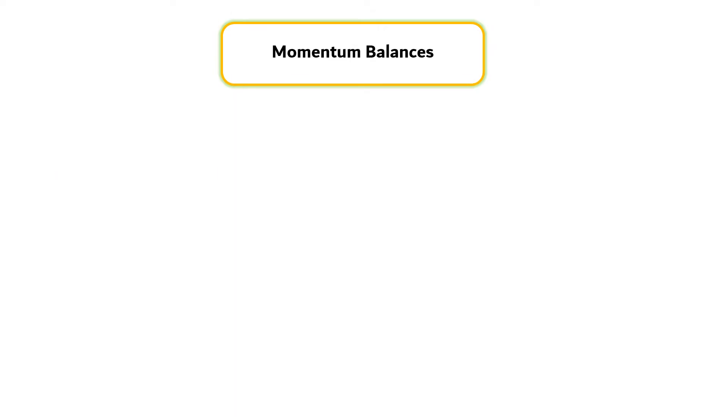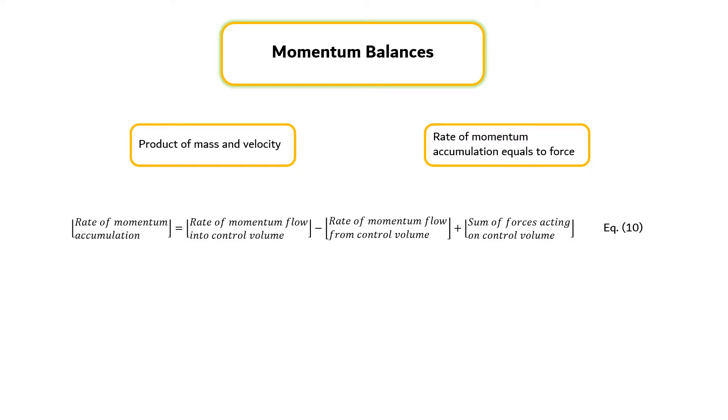In general, momentum is the product of mass and velocity. The rate of momentum accumulation is the rate of change of momentum, which equals the force. A momentum balance in a system can be expressed in words by equation 10.